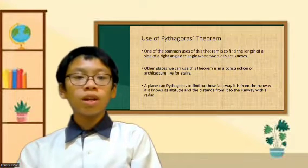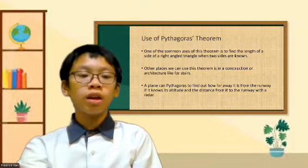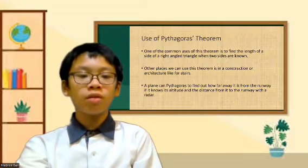The third one: a plane can use Pythagoras to find out how far away it is from the runway if it knows its altitude and the distance from it to the runway.